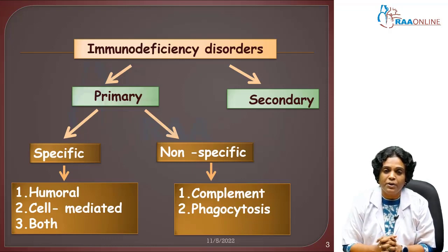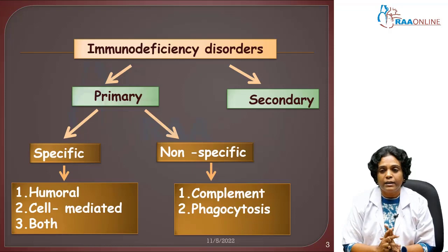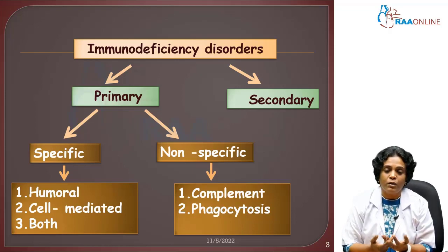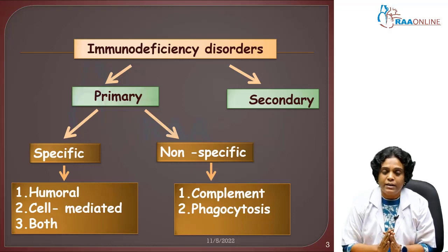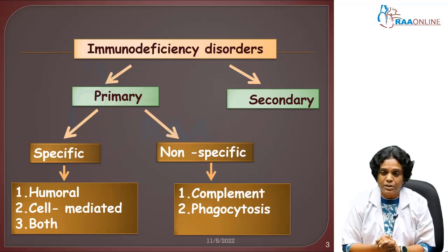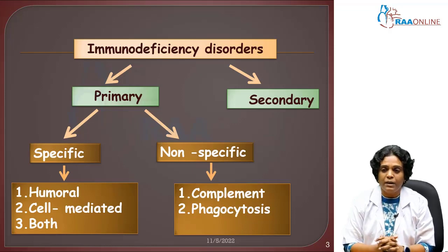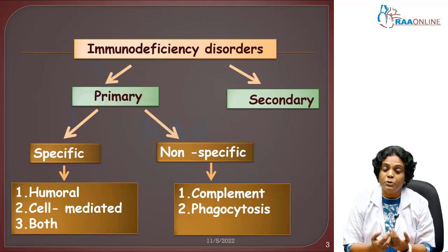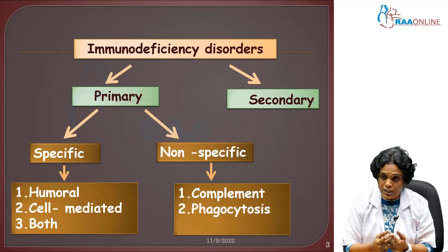In primary immunodeficiency disorder, there will be abnormality or malfunctioning of the immune system itself. Secondary immunodeficiency disorder occurs due to some underlying conditions — such as some infection, certain drugs, nutritional deficiencies, or some metabolic syndrome.